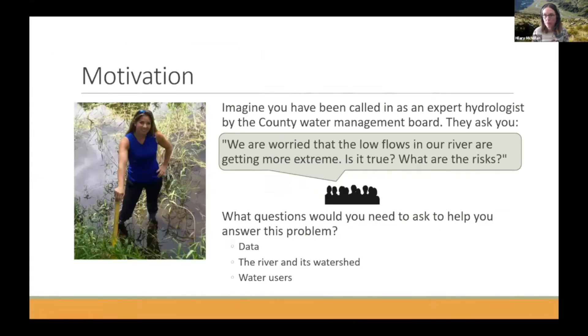The motivation for this module is something like this slide, which I asked my students to think about early in my hydrology classes. So imagine that you've been called in as a hydrology expert and the county water management board want to know, we're worried that low flows in our river are getting more extreme. Is it true? What are the risks? And I asked them to think about what kind of data and information they need to answer this question. So this is the kind of question that we'd like the students be able to answer after they finish our module.